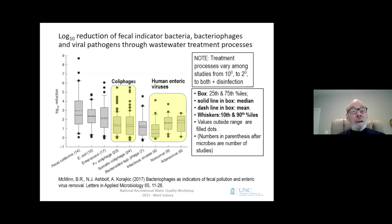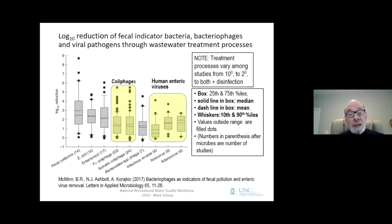The same group also reported on log10 reductions of fecal indicator bacteria, bacteriophages, and viral pathogens through wastewater treatment processes, shown as box-and-whisker plots. Log10 reductions were greatest for fecal indicator bacteria. Highlighted in yellow, the coliphage log10 reductions were lower, at maybe one and a half log10. For human enteric viruses on the right, the least reductions were for infectious viruses at only about half a log10, whereas norovirus and adenovirus gene copy log10 reductions were around one and a half to even two log10.